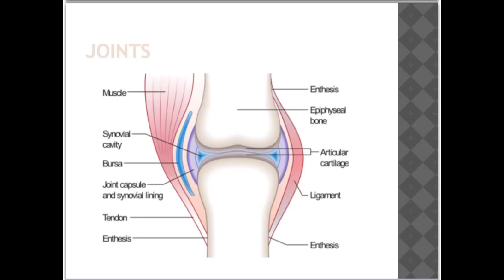A joint is any point in the body at which two bones meet. These joints allow the skeleton to hold together and to move. There are different types of joints within the human body that allow different types of movements, which we'll look at shortly.